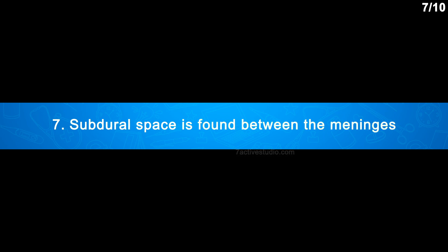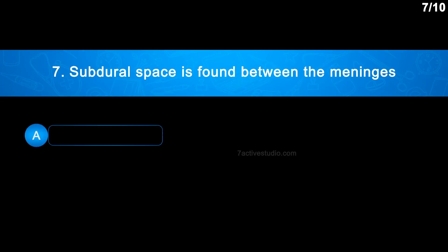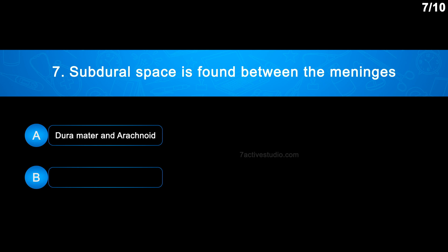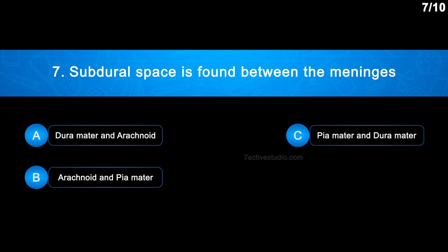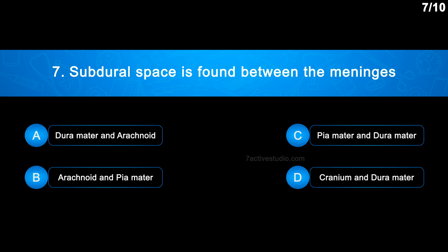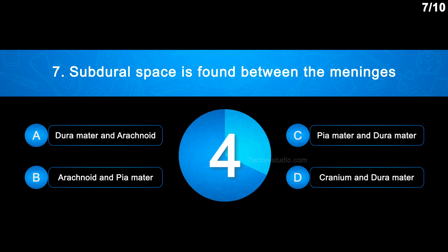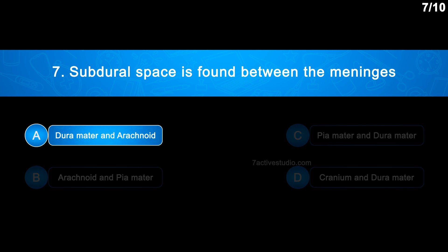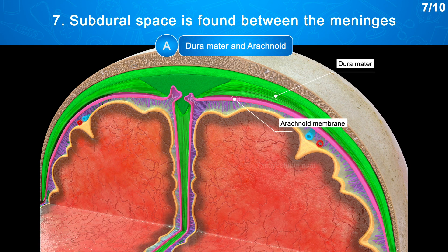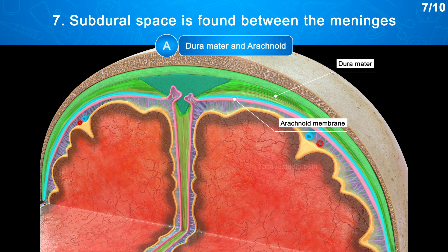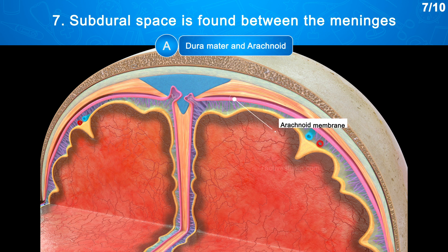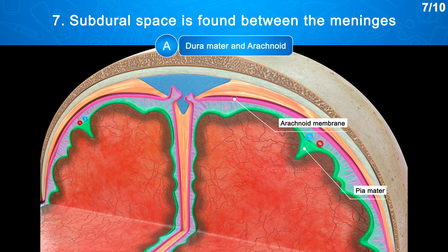Question No. 7: Subdural space is found between which meninges? Option A: Dura mater and arachnoid; Option B: Arachnoid and pia mater; Option C: Pia mater and dura mater; Option D: Cranium and dura mater. The correct answer is Option A: Dura mater and arachnoid. Between the dura mater and the arachnoid membrane is a virtual region known as the subdural space. Between the arachnoid membrane and the pia mater is the subarachnoid space.